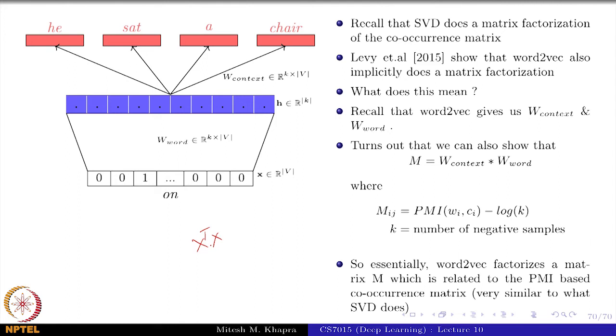You have this memory issue that if you have a very large vocabulary, your PMI matrix is going to be very high dimensional, and then you need to do the factorization of that high dimensional matrix.